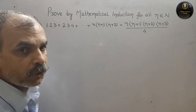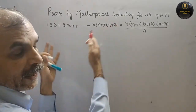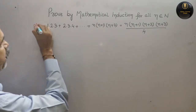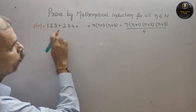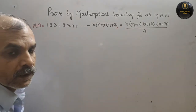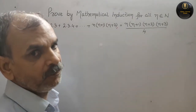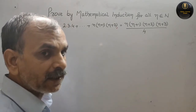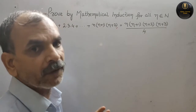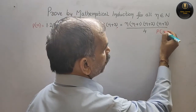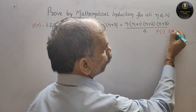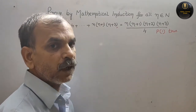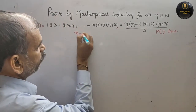First, we take the LHS as P(n). So P(n) is equal to that value. The second step is to prove that P(1) is true. For that, we substitute n = 1.